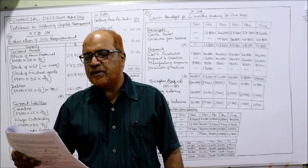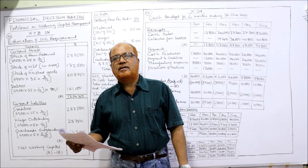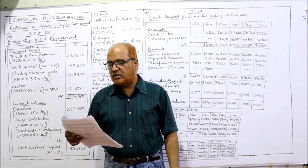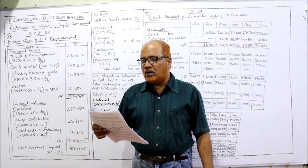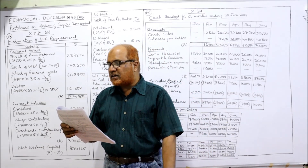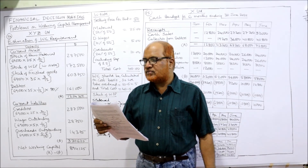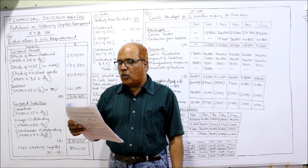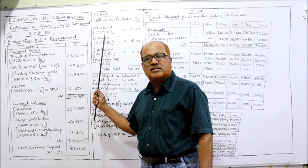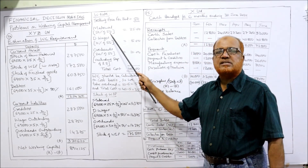Now see the 14th problem. XYZ Limited supplied the following information: sales and production for the year 69,000 units — that means we have to estimate the working capital on the basis of 69,000 units of production. Finished goods in store: 3 months; raw material in store: 2 months; production process: 1 month; credit allowed by creditors: 2 months. Selling price is 50 rupees per unit; raw material is 50% of selling price, which equals 25 rupees.